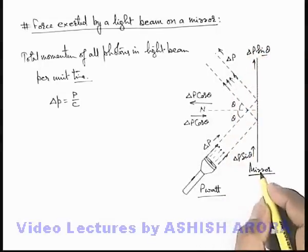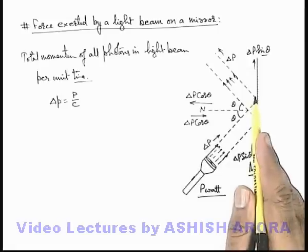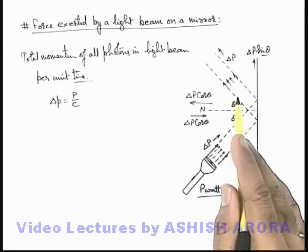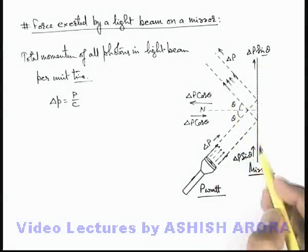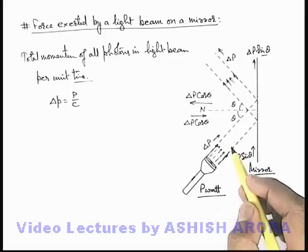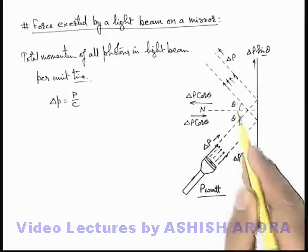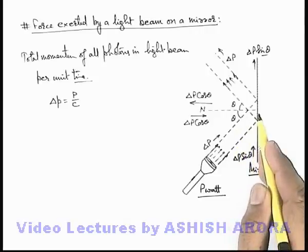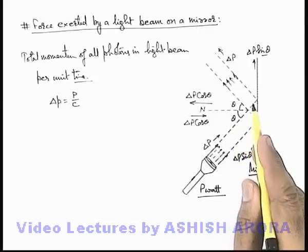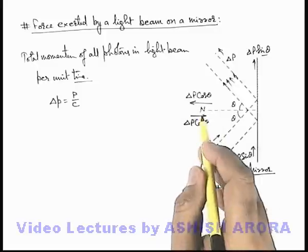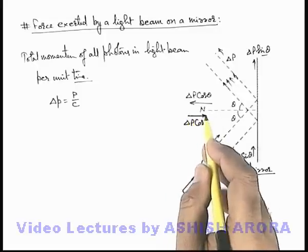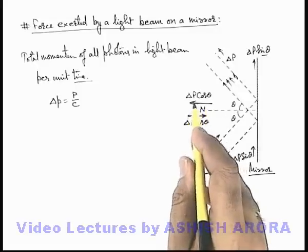So here we can see in the direction parallel to the mirror, before and after reflection, there is no change in momentum of light beam. That means the light beam has not imparted any momentum onto the mirror in the direction parallel to the mirror. But here we can see in the direction perpendicular to the mirror, the momentum of light beam changes.